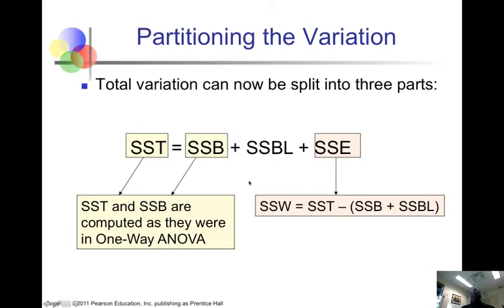Similarly, we will calculate the variation due to the groups. The formula is similar, but instead of using the rows, we're now using the columns. You recall we had a formula already for SST. So how do we calculate SSE? Rather than using the formula, we could actually calculate it by subtraction: SST minus SSB plus SSBL will give us SSE.